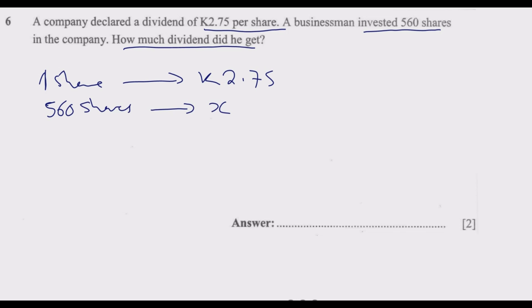So this question is just trying to assess your ability to multiply numbers with decimal places. That's the concept behind. Otherwise, it's a straightforward question. So what we know is one share gives K2.75, 560 shares give X. So this is just a matter of multiplication.